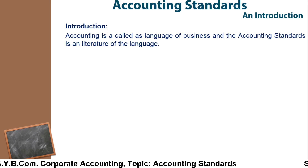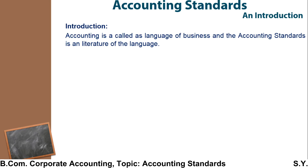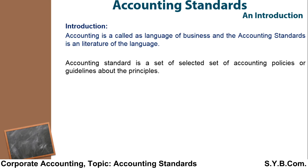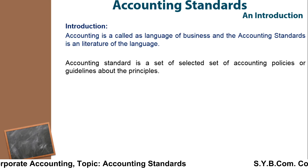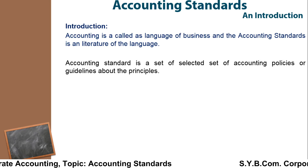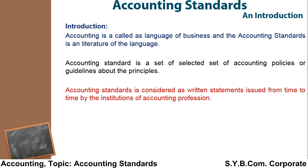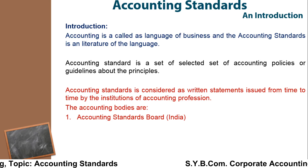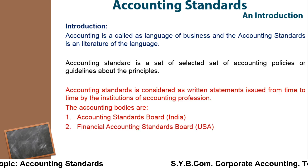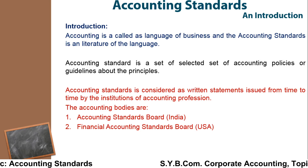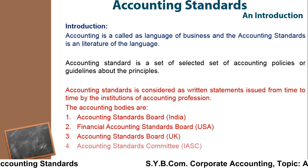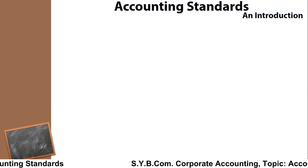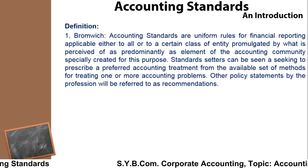Accounting Standard is called the language of business, and Accounting Standards are a set of rules and regulations given as policies or guidelines about principles. Accounting Standard is considered a written statement issued from time to time by institutions of the accounting profession, that is ICAI. In India, the body is known as the Accounting Standard Board. In USA, it is the Financial Accounting Standard Boards, and in UK it is the Accounting Standard Board and Accounting Standards Committee.